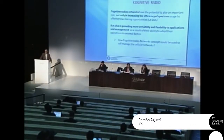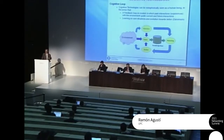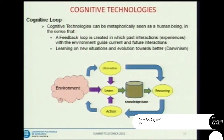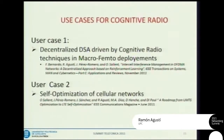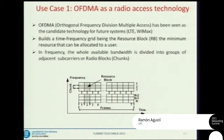Moving to the last point: how can the cognitive radio concept be used to manage cellular networks? The cognitive loop — observation of the environment, reasoning to decide, and action — with learning and a knowledge base in between, is the framework. The two use cases I want to present briefly are: first, decentralized DSA; and second, optimization of cellular networks. For the mainstream access case, we have fixed reuse factors to handle interference at the macrocellular level, but at the femto/pico level there is no regular deployment, so we need adaptive frequency allocation.